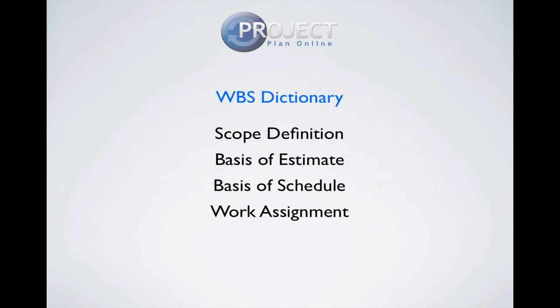So what do these two documents mean for us? The Basis of Estimate and the Basis of Schedule build up a much more important body of knowledge in your project — the WBS dictionary. So along with your scope definition, your Basis of Estimate, your Basis of Schedule, and how you're going to assign the work based on those groupings of work, this makes up your WBS dictionary and becomes a crucial document in all your project control processes for the project execution.